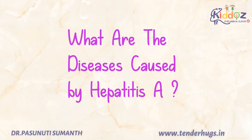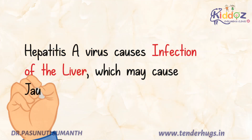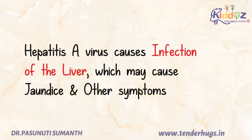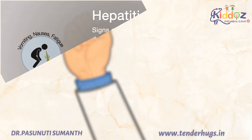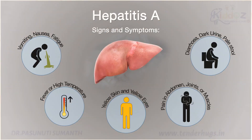Now we'll see what are the diseases caused by this virus. This virus causes infection of the liver, which may cause jaundice and many other symptoms. Older children may have mild symptoms like weakness, loss of appetite, fever, nausea, and vomiting.